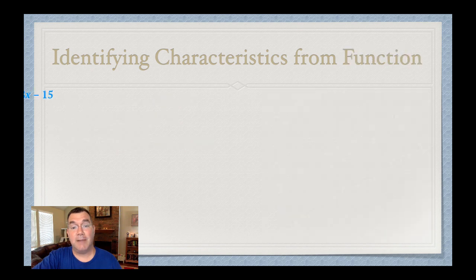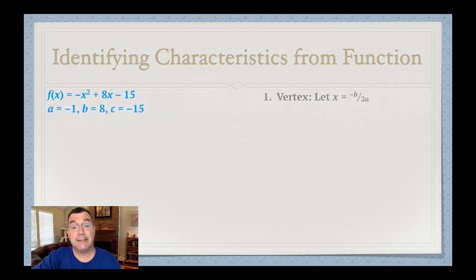All right, now if I have a function instead of a graph, I still need to be able to identify those characteristics. So I'm going to have to use formulas instead. So the vertex, I need the x and y for the vertex, because that's a point with two coordinates. So I'll use the same formula as for the axis of symmetry. That is x equals negative b over 2a.